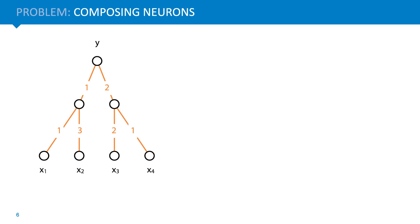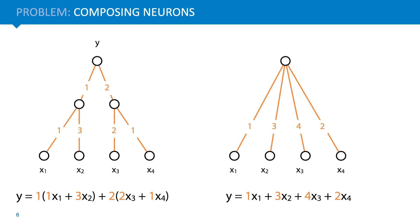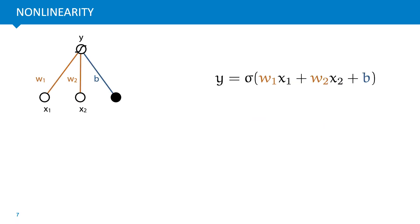We can write down the function computed by this perceptron, as shown on the bottom left. Working out the brackets gives us a simple linear function of four arguments. Or equivalently, a single perceptron with four inputs. This will always happen, no matter how we chain the perceptrons together. This is because perceptrons are linear functions. Composing together linear functions will only ever give you another linear function. We're not creating models that can learn non-linear functions. If we're going to build networks of perceptrons that do anything that a single perceptron couldn't do, we need another trick.